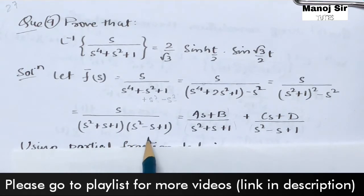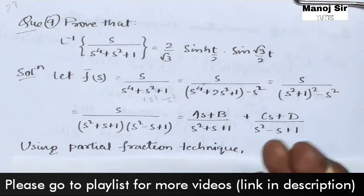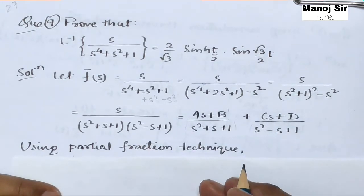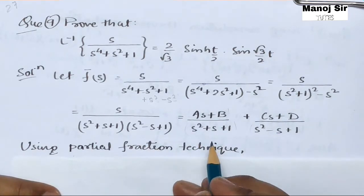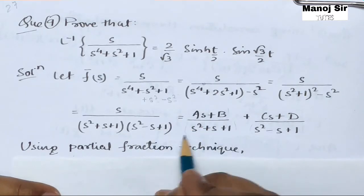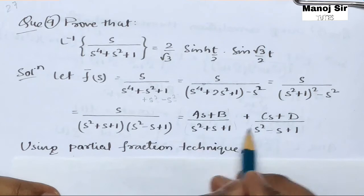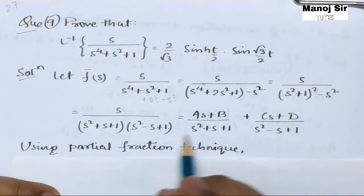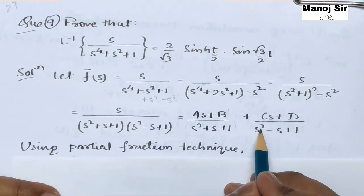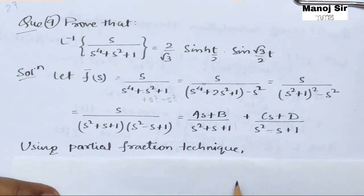Now we apply partial fraction technique. We rewrite s/[(s² + s + 1)(s² − s + 1)] as (As + B)/(s² + s + 1) + (Cs + D)/(s² − s + 1).